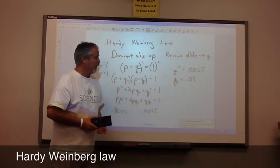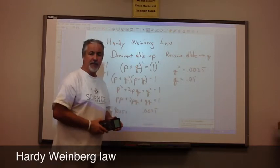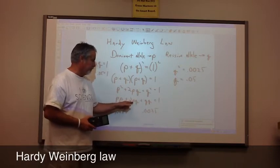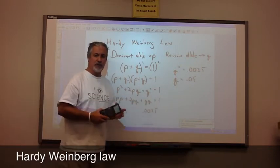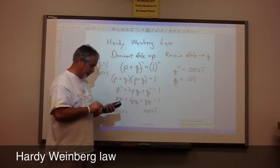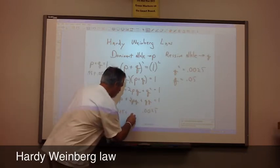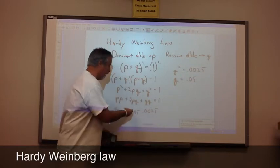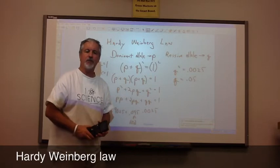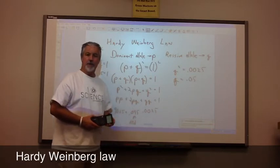I just happened to choose sickle cell anemia for this illustration. It works with any genetic disease, but 2 times pq are the carrier. These are the people that walk around that do not show sickle cell anemia, but carry the disease, and that's 2 times p, which is 0.95, times q, which is 0.05, and that's 0.095. That is about 10% of the population walks around carrying sickle cell anemia, and that's true in the African-American community.